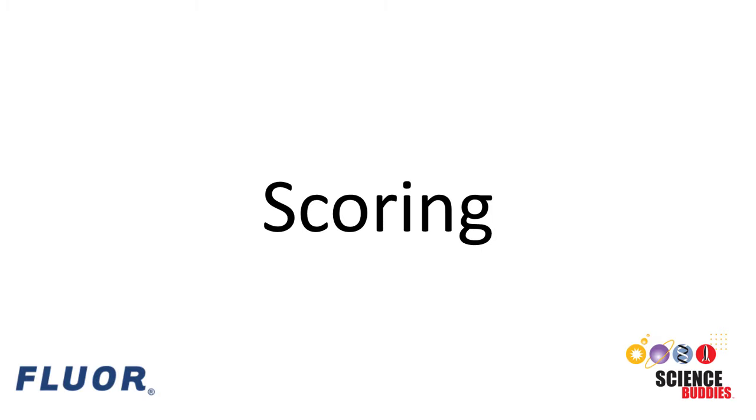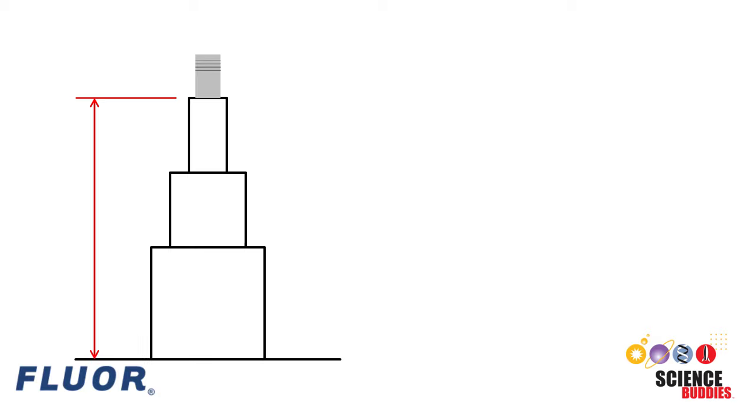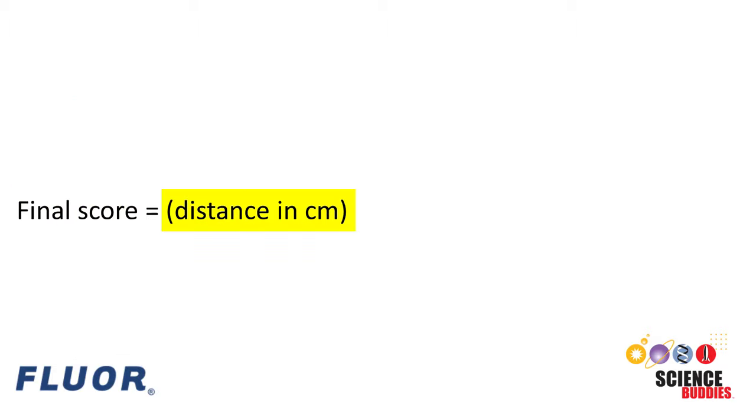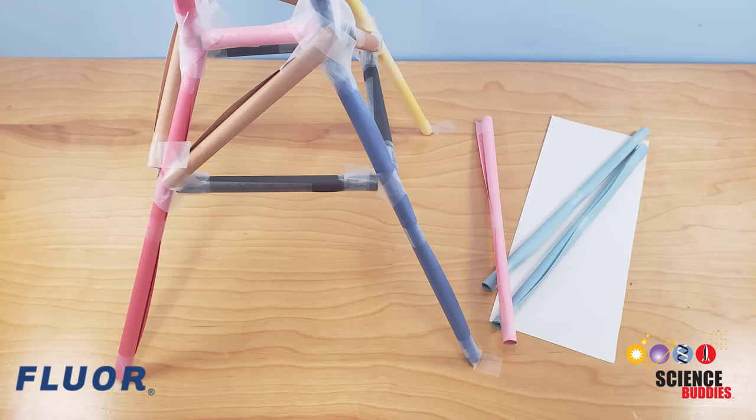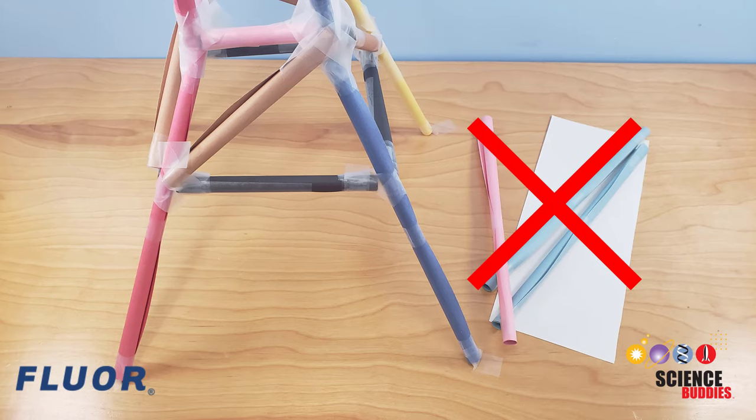Your final score is based on the distance from the base of the tower to the bottom of the can and the number of pieces of paper you used using this equation. Final score equals distance from the base of the tower to the bottom of the can in centimeters minus two times the number of pieces of paper. Only paper used in your final design counts towards the score. Sheets used in earlier prototypes do not count, so don't be afraid to try out different designs.